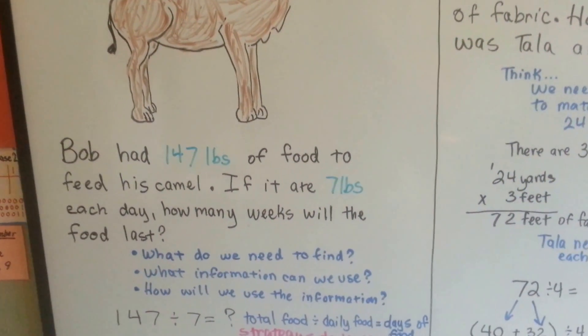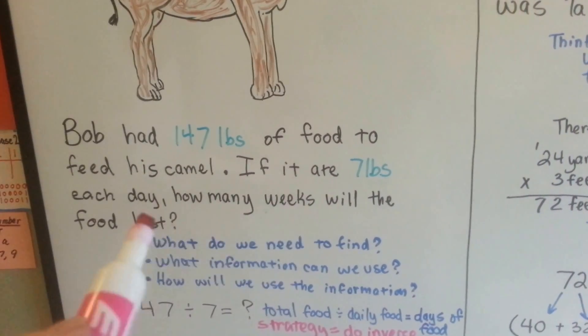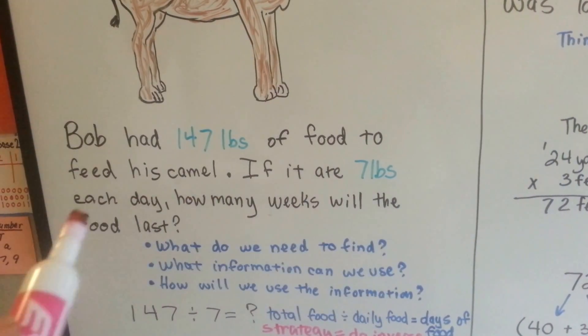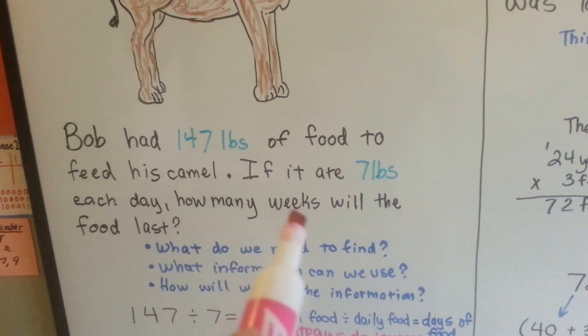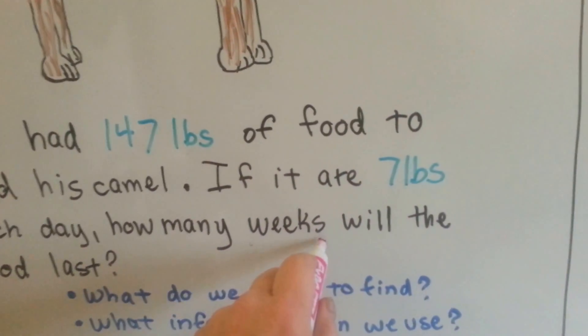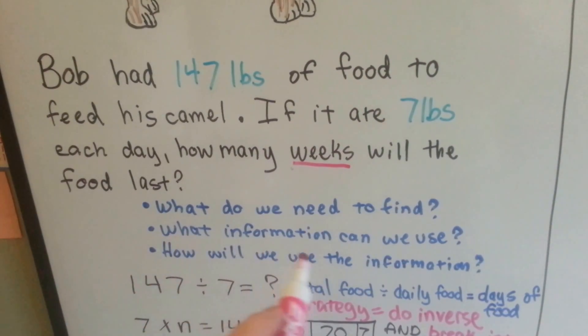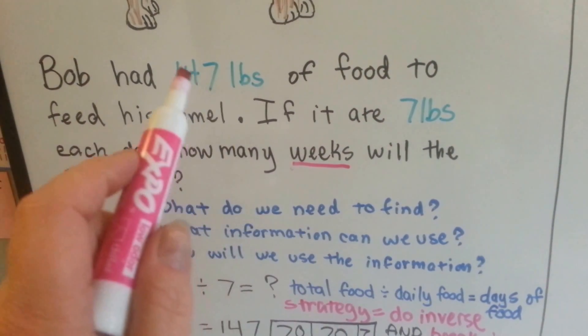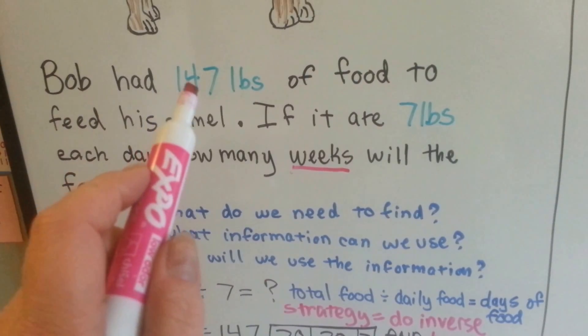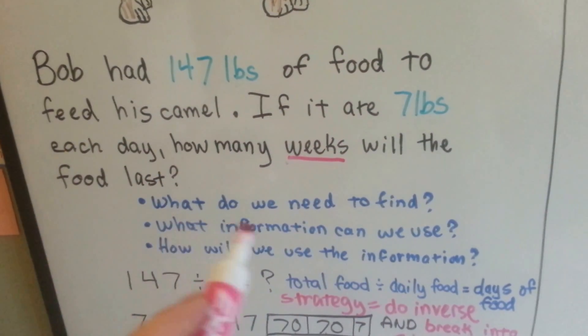So we ask ourselves, what do we need to find? Well, did you notice that it says he ate 7 pounds each day, but we need to know how many weeks the food will last? So that right there tells me we need to find how many weeks the food will last. What information can we use? We can use the fact that he's got 147 pounds of food and that it eats 7 pounds each day.